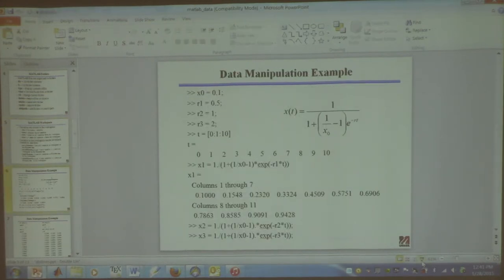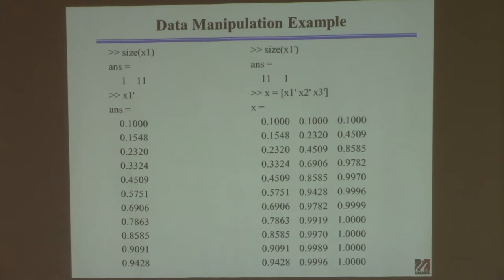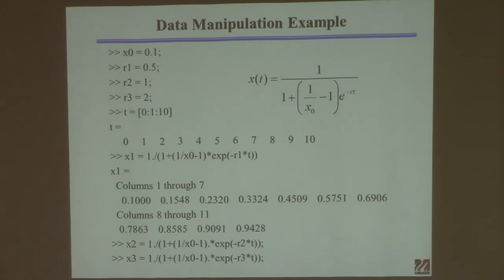Now I'm going to go through this example. This should look familiar — it's the population growth example you did last time, the logistic equation. It's a differential equation with this solution: x starts at x0, some number less than 1, and goes toward 1. The solutions look like an increasing curve — how fast it gets there depends on the rate r. I'm using this example to show you how to manipulate data inside MATLAB.